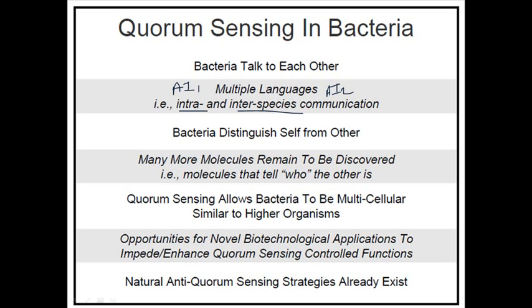Many more molecules remain to be discovered, because this is only 10 to 15 years of research. You generally do not find this information in books because it is a really new topic. This is a very important area for active research in future generations. We need to find which molecule does what and what is the necessity of each molecule throughout the quorum sensing system.